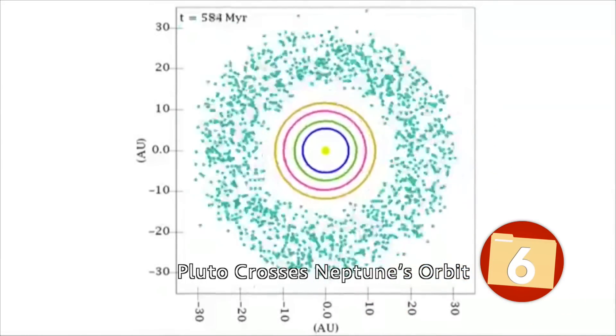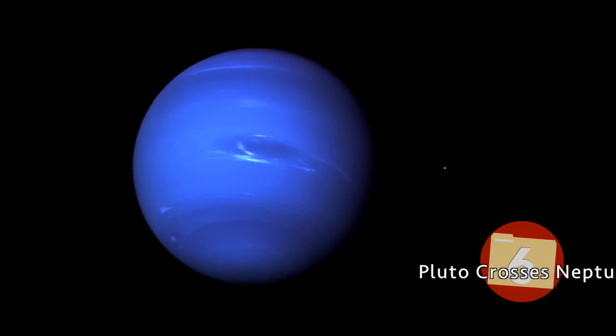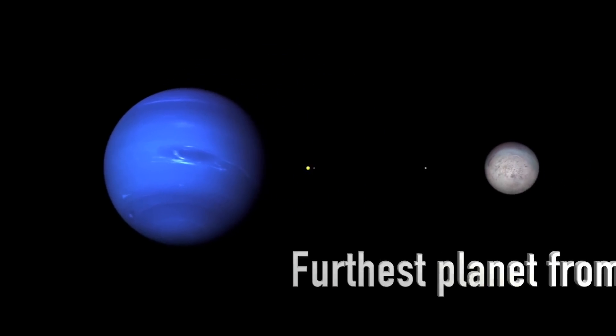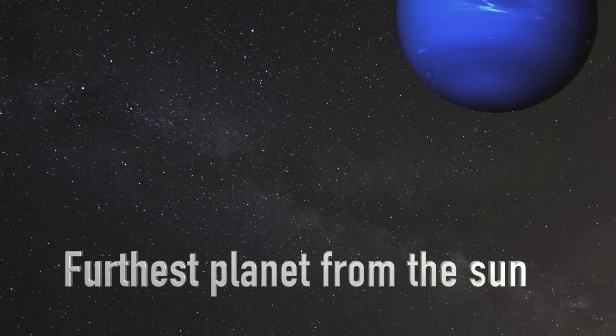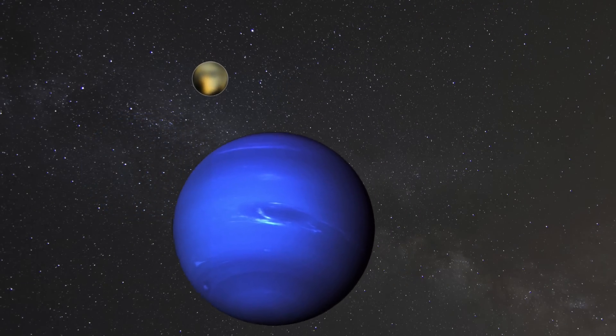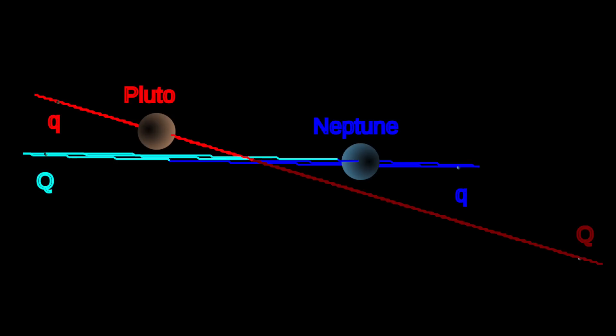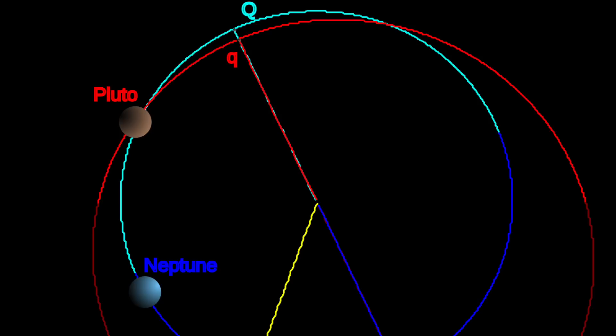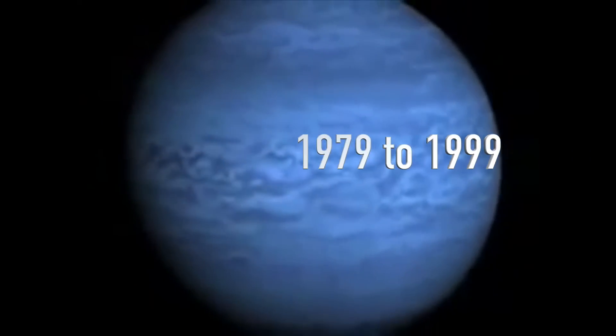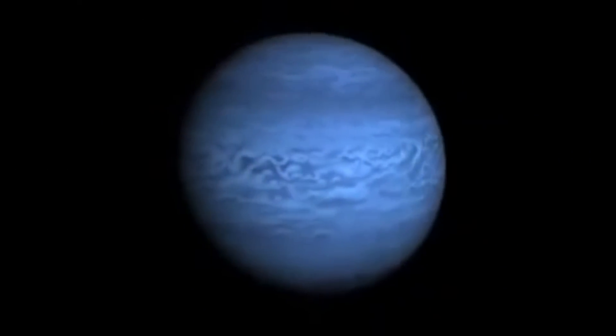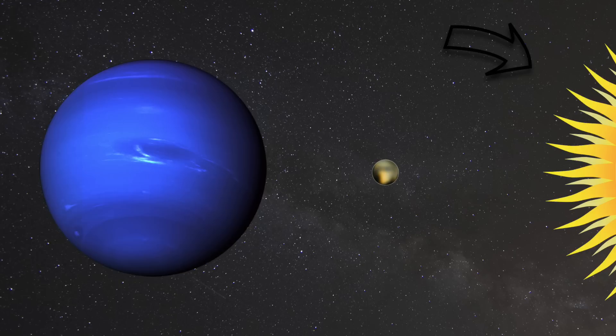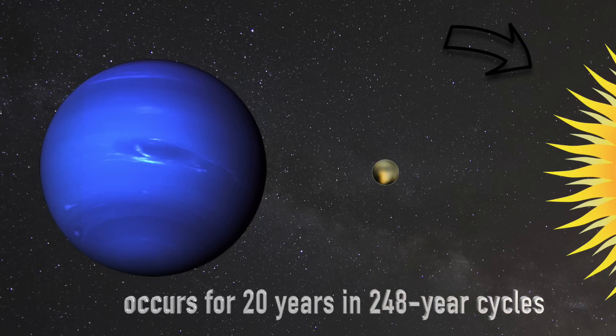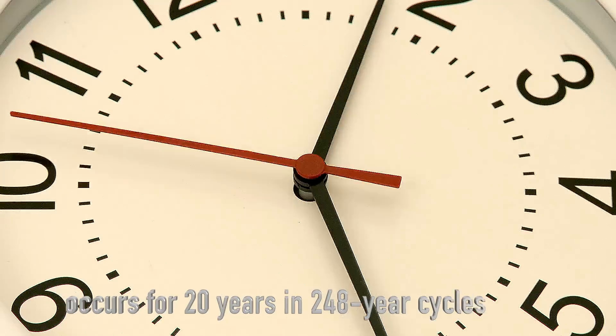Pluto Crosses Neptune's Orbit. While Pluto is known for being the farthest planet from the Sun, there actually is a moment in time where Neptune swaps places with it. Pluto's elliptical orbit around the Sun causes it to cross paths with Neptune's orbit. From the period of 1979 to 1999, Neptune was actually farther from the Sun than Pluto, a rare phenomenon that occurs for 20 years in 248-year cycles.